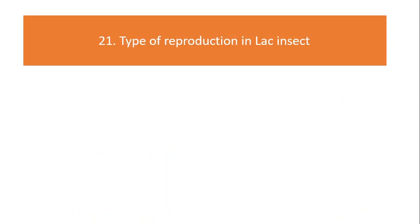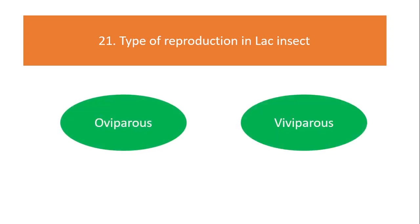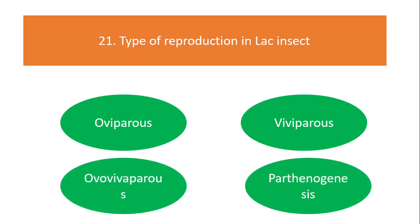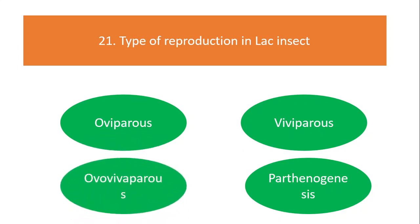Type of reproduction in lac insect: oviparous, viviparous, ovo-viviparous, or parthenogenesis? The answer is ovo-viviparous.